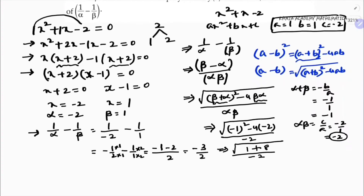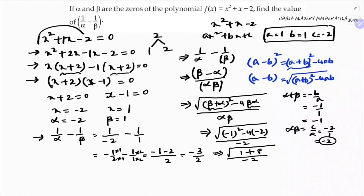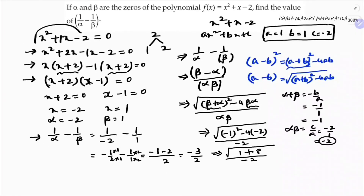Simplifying: root 9 by minus 2, root 9 is 3, so we get 3 by minus 2, which is minus 3 upon 2.